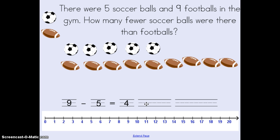You'll notice that I also have two extra lines after my answer. That's because we also need to label our answer. So here I have nine minus five equals four. The question was how many fewer soccer balls were there than footballs? So to label my answer I would say four fewer soccer balls. And that's labeling my answer according to the question that was asked.